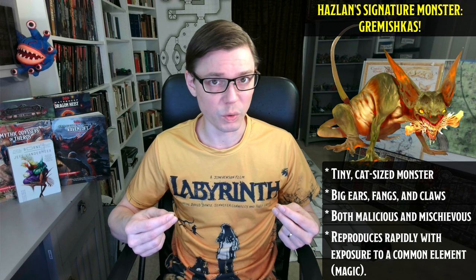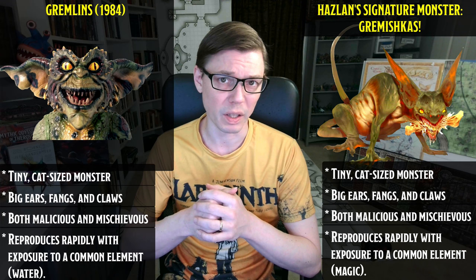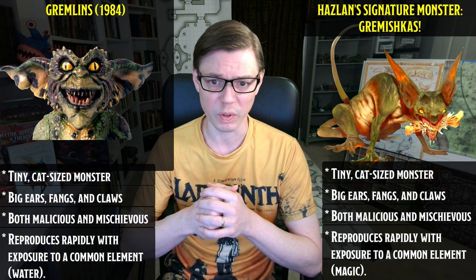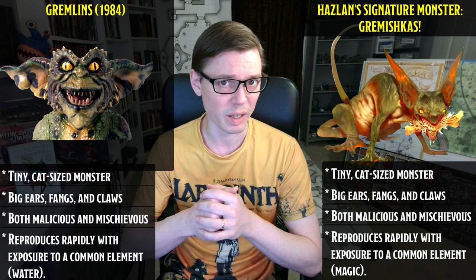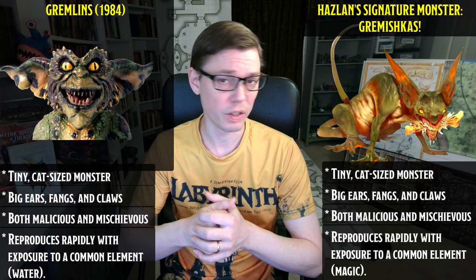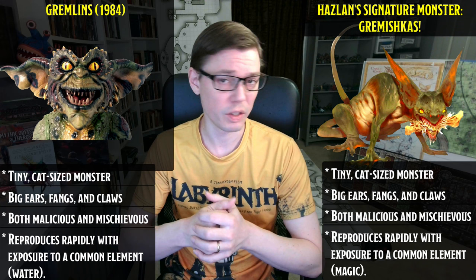The flagship monster of Haslan is the Gromishka — a tiny monster about the size of a cat with huge ears, fangs, and a penchant for both malice and mischief. It has an unusual feature where, if exposed to a common element under certain conditions, it will reproduce with incredible rapidity, so that one may easily become hundreds or even thousands. If you've seen the 1984 Steven Spielberg movie Gremlins, this sounds familiar: both monsters begin with the syllable 'Grem,' both explode into swarms under specific conditions — gremlins when exposed to water, Gromishkas when exposed to magic. Whoever designed the Gromishka was clearly thinking Gremlins.